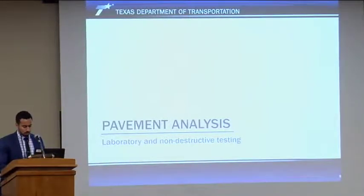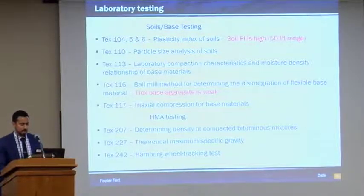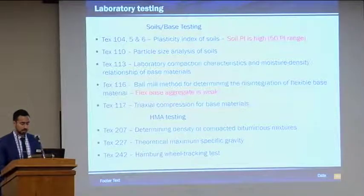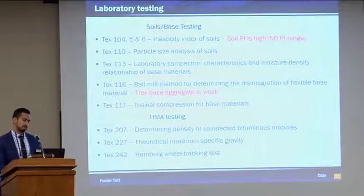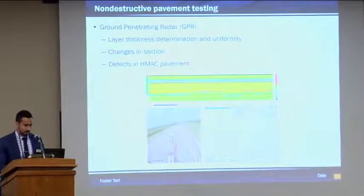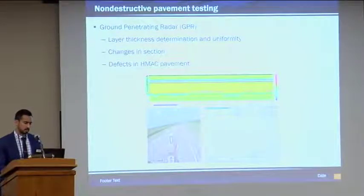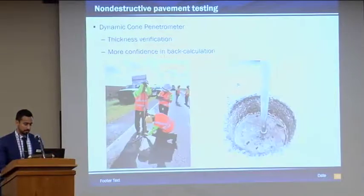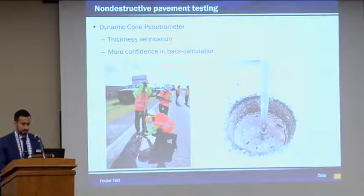These are the pavement analysis tools. We did a lot of laboratory testing — soils, base, and hot mix testing — but to summarize it, the soil PI is pretty high, in the 50 range, and the flex base aggregate is pretty weak based on the wet ball mill. We did a lot of non-destructive testing. We ran GPR to get the layer thicknesses and look for pavement irregularities. We ran the falling weight deflectometer to get the stiffness of the pavement layers, and we ran DCP just to validate the FWD data.